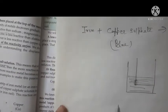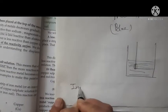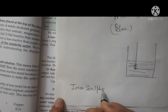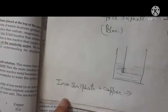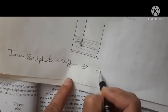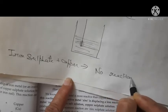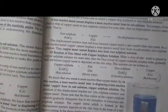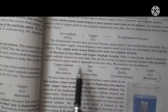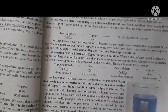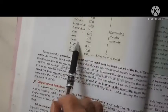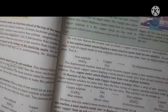Now suppose you take iron sulfate solution and add copper. Since copper is weaker than iron, copper will not displace iron sulfate — no reaction will take place. On the other hand, zinc plus copper sulfate: zinc is placed above copper in the reactivity series, so zinc is more reactive than copper. Therefore, zinc will displace copper and form zinc sulfate solution, and copper will be displaced.